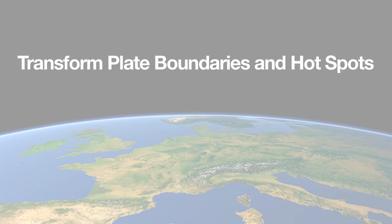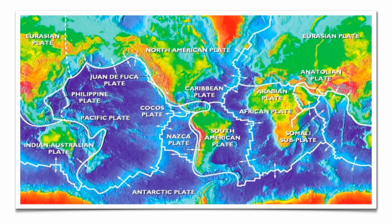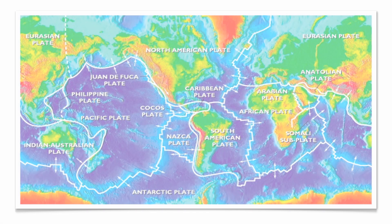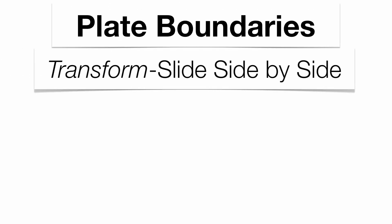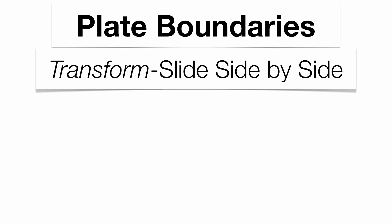The most prominent transformed plate boundary we have on the planet is right here in the United States, right in California — that's going to be the San Andreas Fault. A transformed plate boundary just means when two plates slide side by side next to each other, traveling in opposite directions.